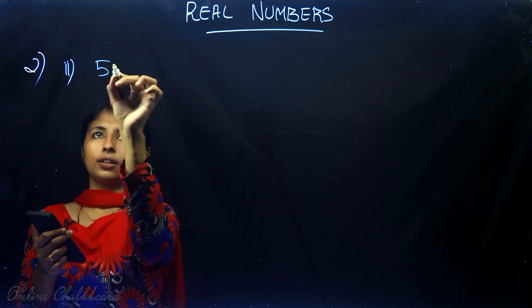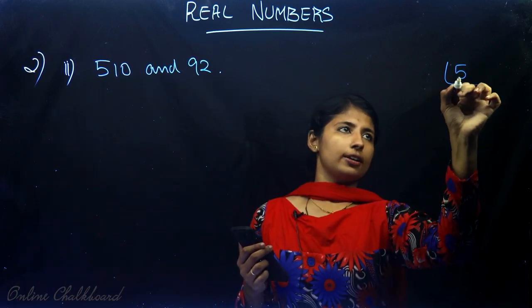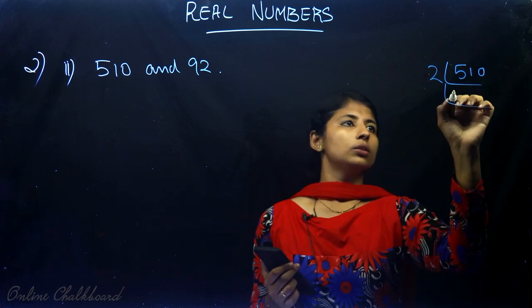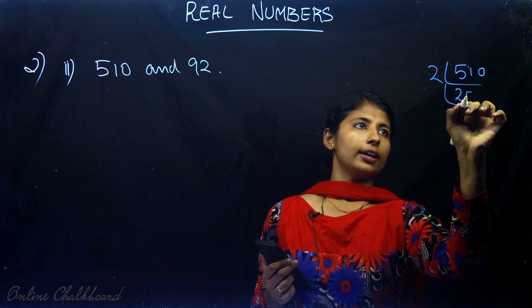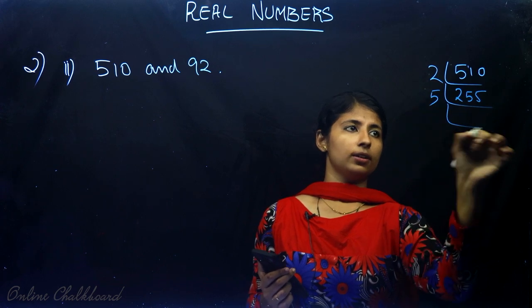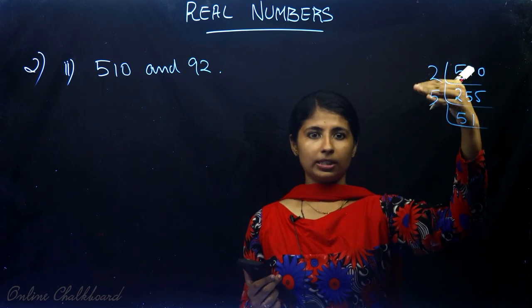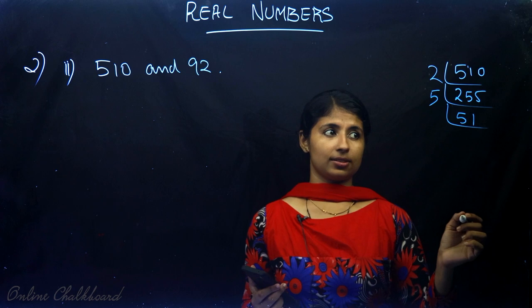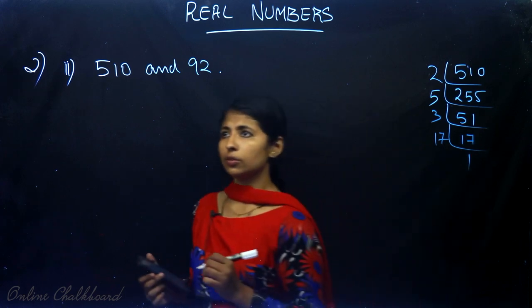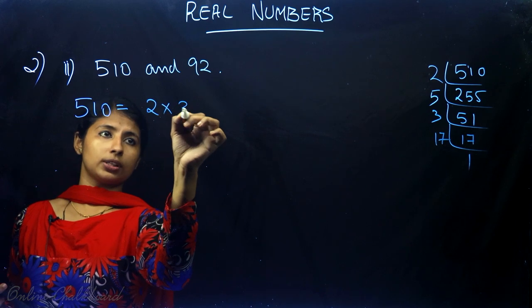For the pair 510 and 92, we first find the prime factorization of 510. Since 510 is even, it is divisible by 2. We get 2 × 255. The last digit is 5, so divisible by 5, giving 51. Since 5 + 1 = 6 is a multiple of 3, we divide by 3 to get 17, which is prime. So 510 = 2 × 3 × 5 × 17.